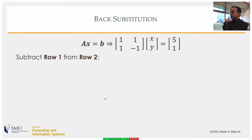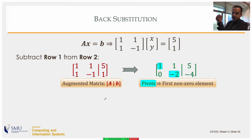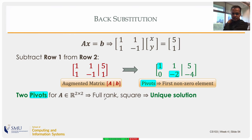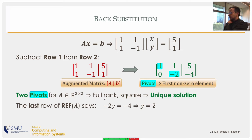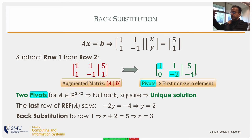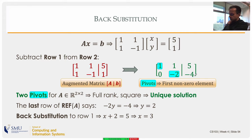Here's the back substitution example on our original two-equation system. After forming the augmented matrix and subtracting row one from row two, we get the REF with two pivots. The last row reads: minus 2y equals minus 4, so y equals 2. Back substituting into row one: x plus 2 equals 5, so x equals 3. That is the systematic algorithmic solution.